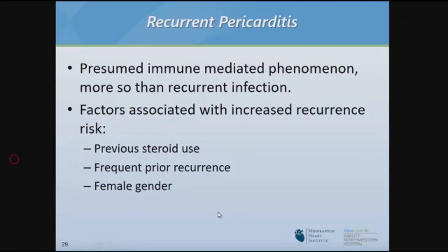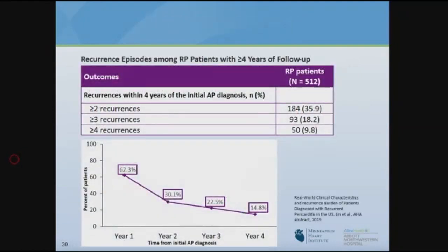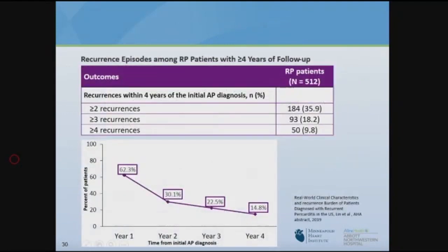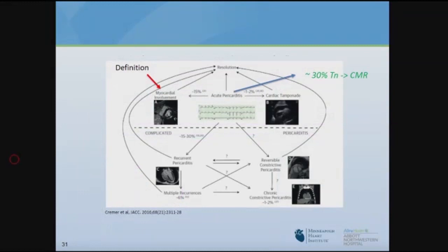Patients who have had frequent recurrences in the past are more likely to have them again. Looking at the Optum Insurance database for patients with a diagnosis of pericarditis with more than four years of follow-up, about 36 percent had more than two recurrences, and 10 percent had more than four recurrences. Most recurrences happen in the first year, but 15 percent have recurrence four years out — so this can happen over and over again, years after the index episode.